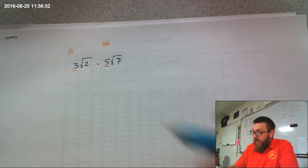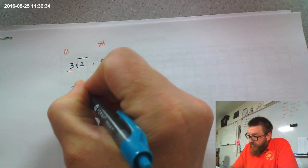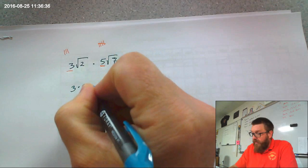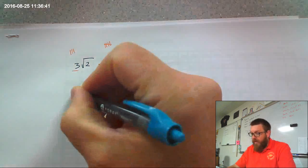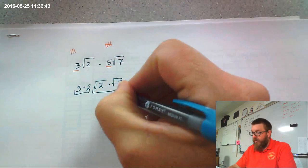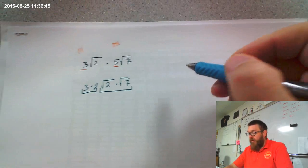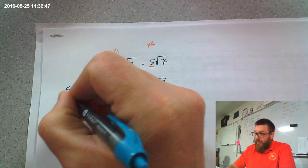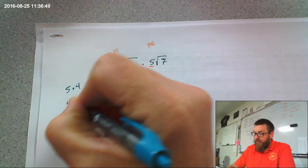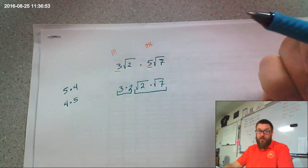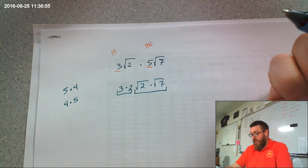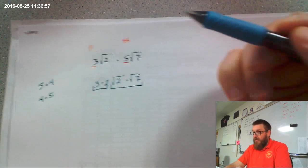First thing you're going to do is you're going to multiply the 3 times the 2. You're going to put them together. And you're going to multiply the square root of 2 times the square root of 7 together. You're going to multiply the irrational numbers together and the rational numbers together. Now, the reason we can rearrange the order is because of the commutative property of multiplication. It doesn't matter what order you multiply numbers in. You get the same thing. It doesn't change the value.